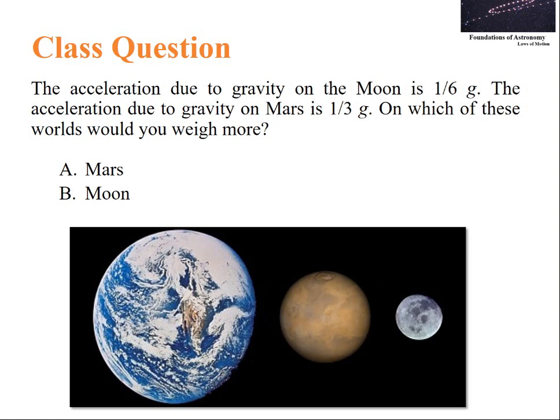Now let us have a class question. The acceleration due to gravity on moon is g by 6. The acceleration due to gravity on Mars is g by 3. On which of these worlds would you weigh more? The answer is definitely Mars, because gravity of Mars is greater than gravity of moon.